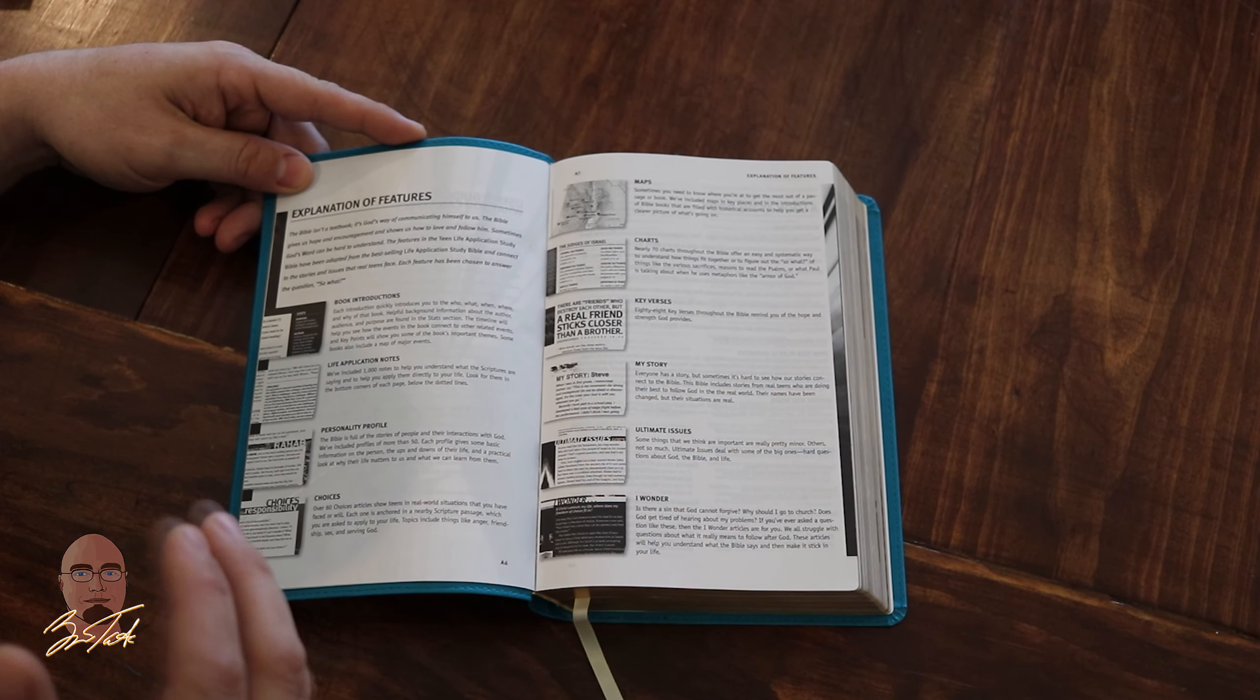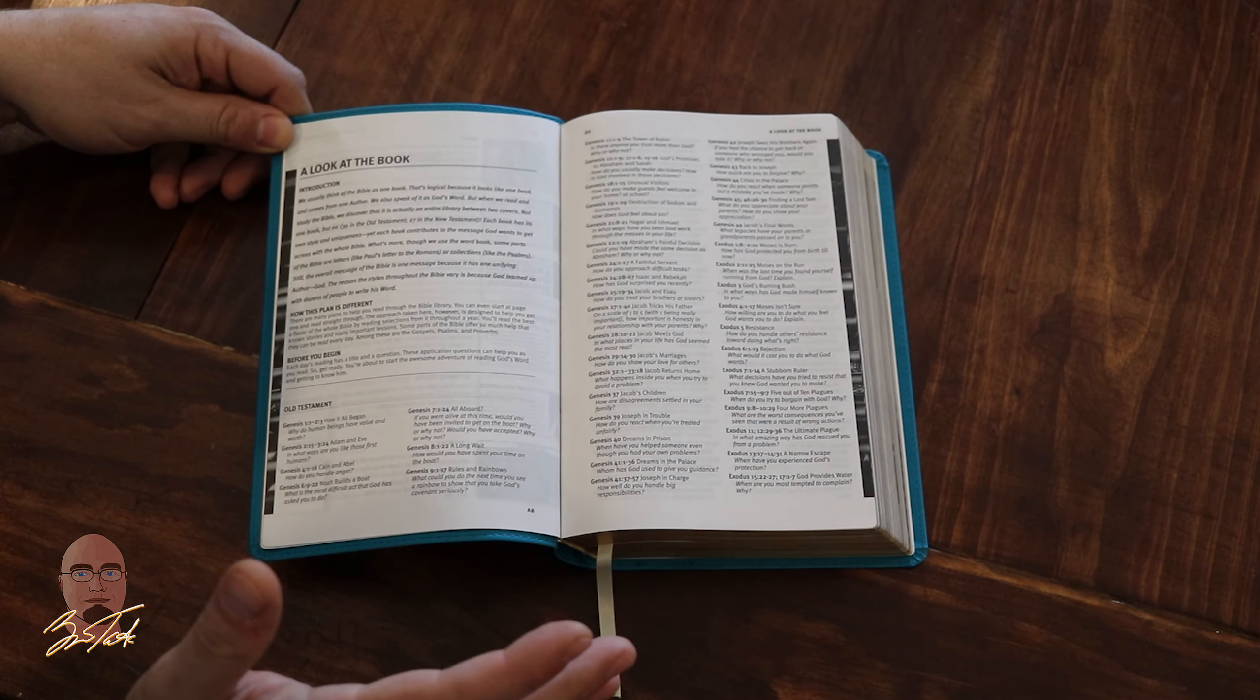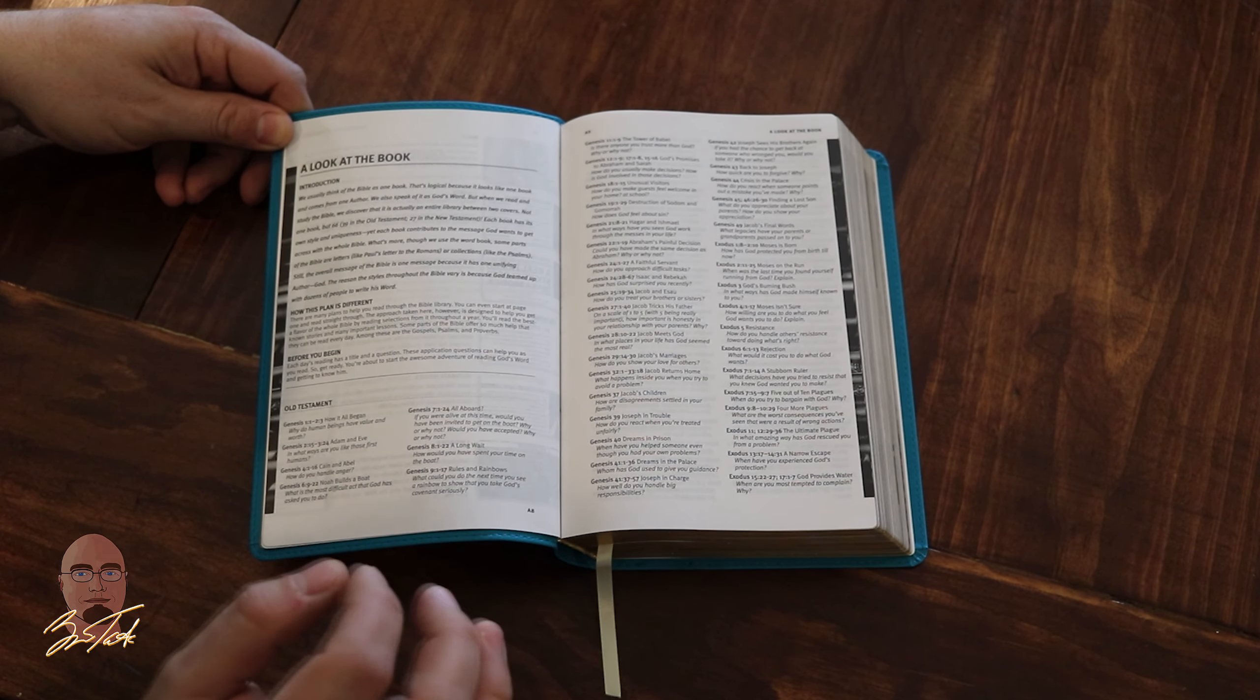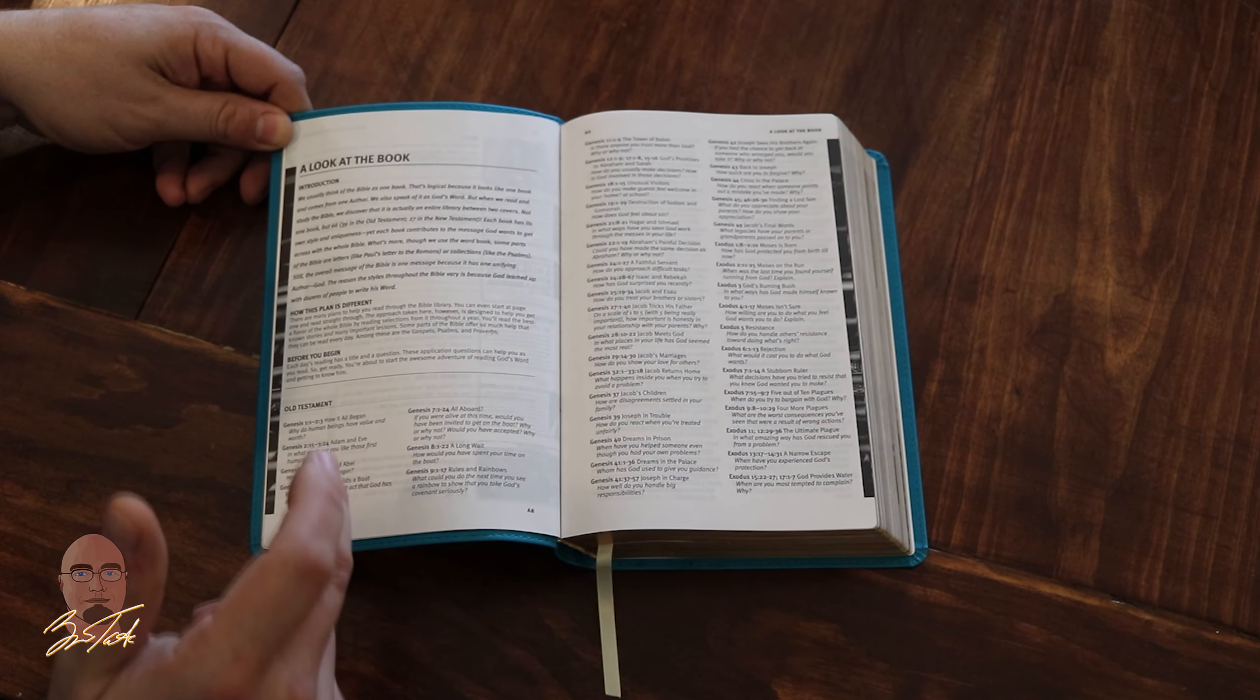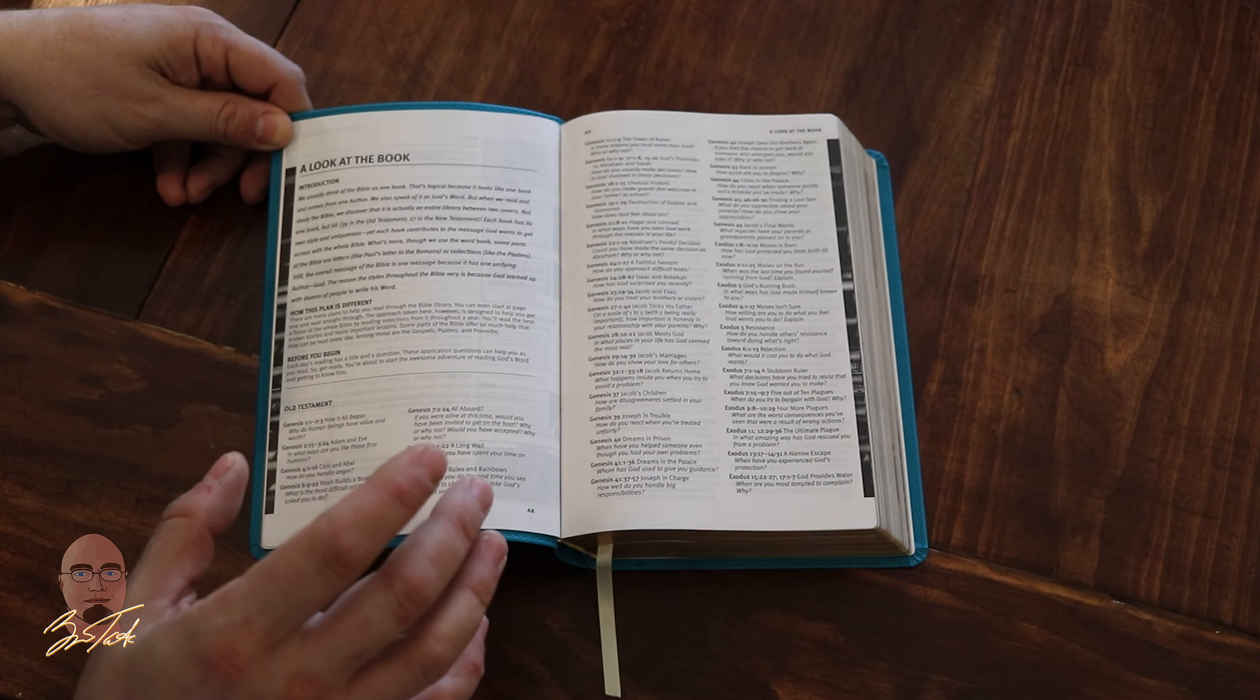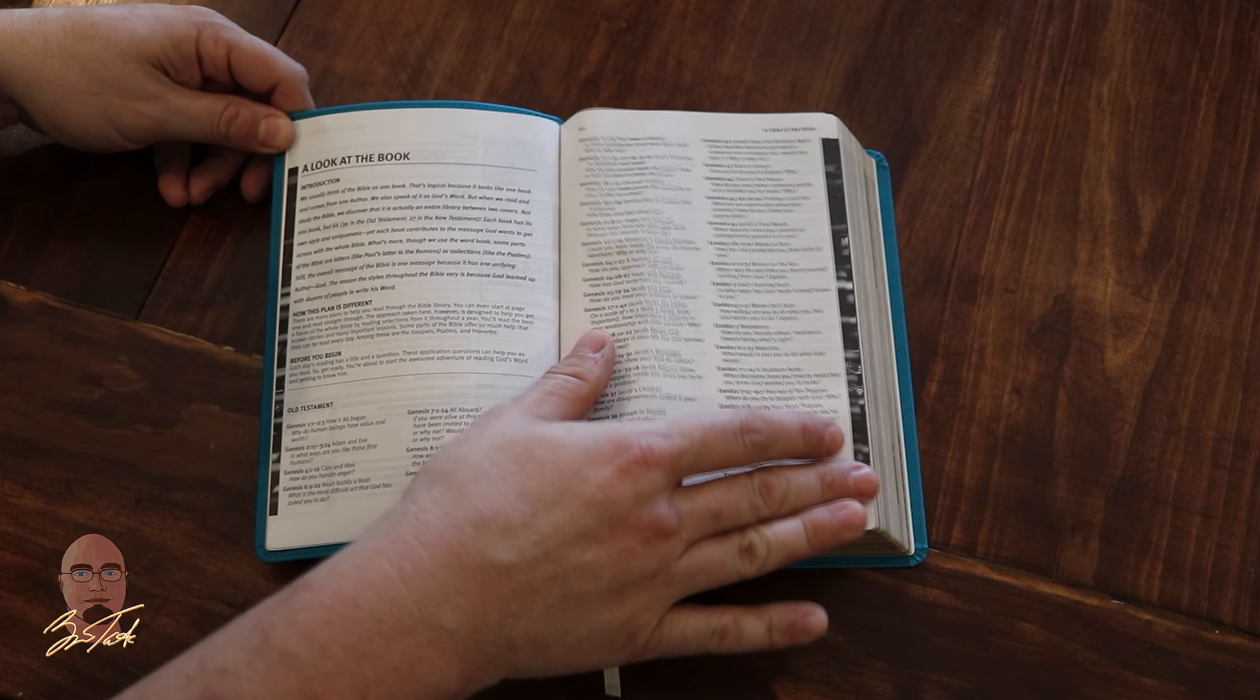Now we come to the 'Look at the Book' section, which just gives you a glimpse at different stories in the Bible. It points out different stories and asks a key question where a student can find specific stories in the Bible or answer specific questions. There's about 12 pages, Old and New Testament all together, and very helpful.